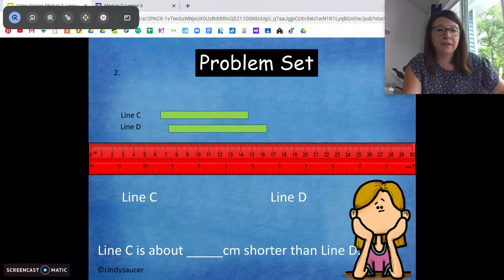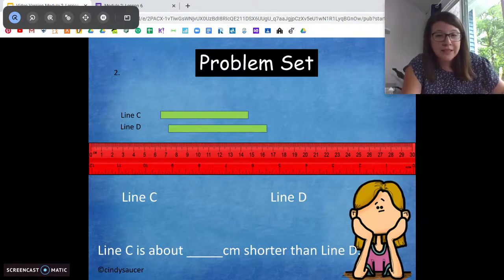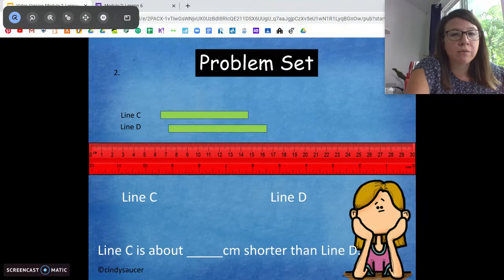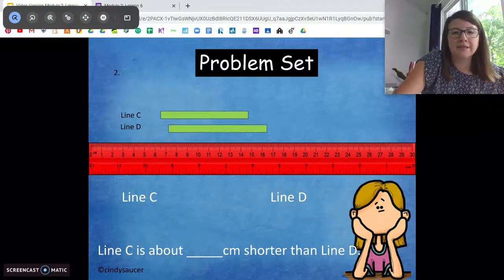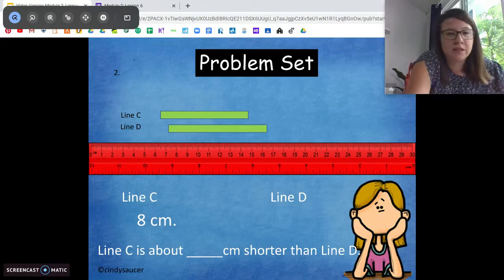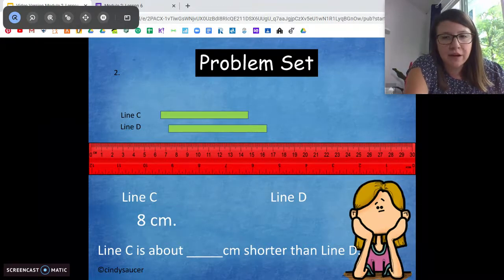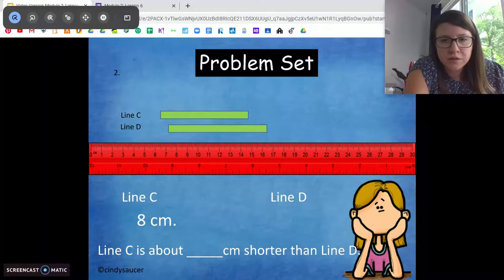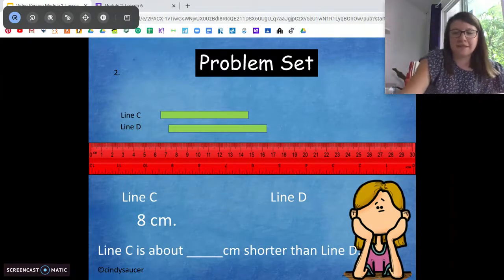So line C, I think, starts at about six centimeters, ends at about 15 centimeters. So we have one, two, three, four, five, six, seven, eight centimeters. And line D starts at about seven, ends at about 16. One, two, three, four, five, six, seven, eight, nine centimeters.